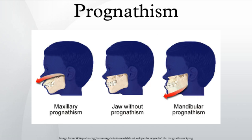Treatment: The most common treatment for mandibular prognathism is a combination of orthodontics and orthognathic surgery. The orthodontics can involve braces, removal of teeth, or a mouth guard.